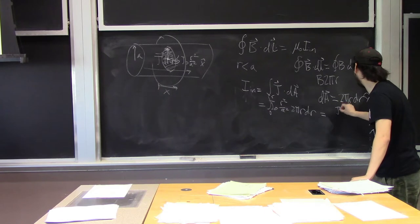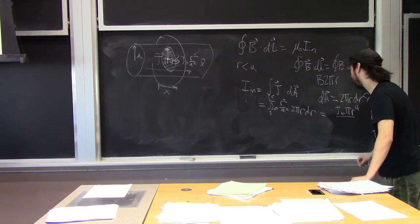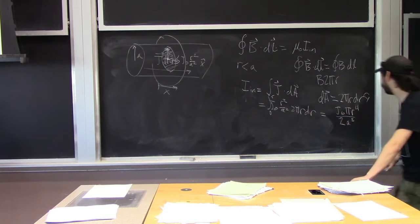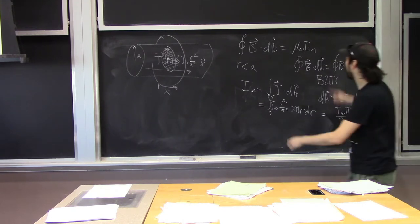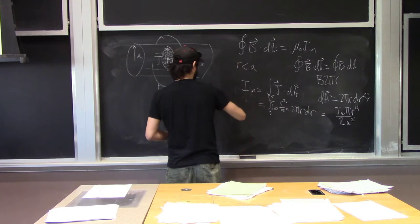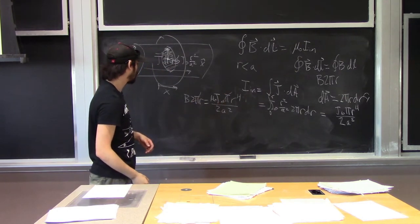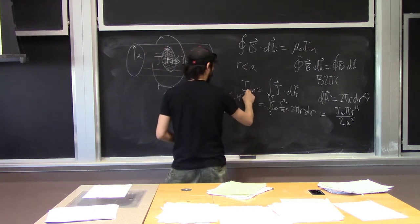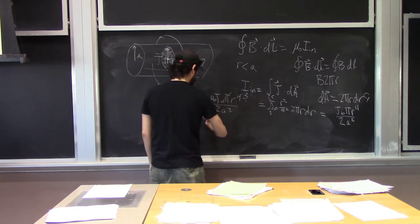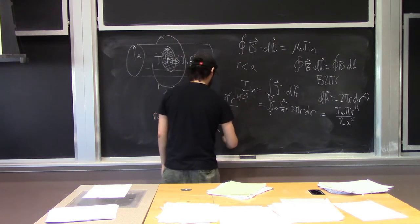Evaluating that integral of r³ dr gives r⁴/4, which cancels one factor of two. So I_in equals J₀πr⁴ divided by 2A². Plugging into Ampere's Law: B·2πr = μ₀J₀πr⁴/(2A²). Canceling a factor of π and a factor of r, we get that for r less than A, B as a vector equals μ₀J₀r³/(4A²) in the θ-hat direction.